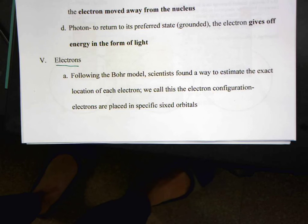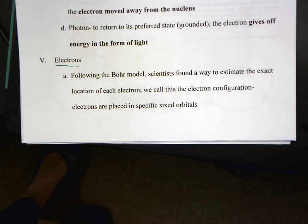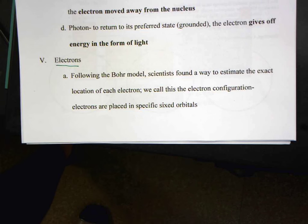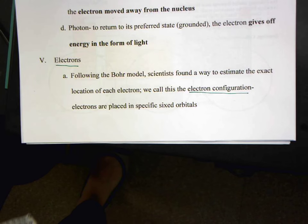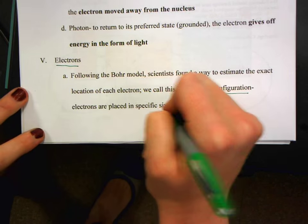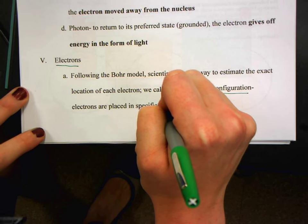So following the Bohr model, we actually determined a way to figure out the exact location of each electron. And we call this the electron configuration. It's essentially a map of where all of the electrons are placed and the specific sized orbitals.